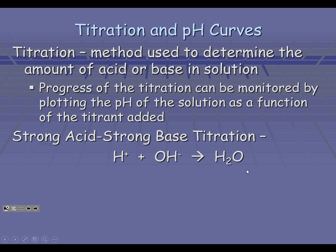This one, like all titrations, always goes to completion where you have used up all of your hydrogen ions and your hydroxide ions. The net ionic equation of a strong acid, strong base titration is always the same: it is always the hydrogen ions plus the hydroxide ions yields liquid water.